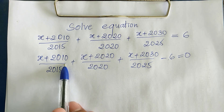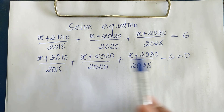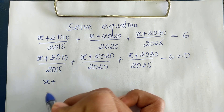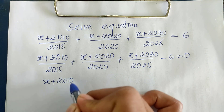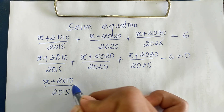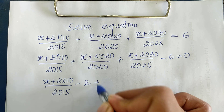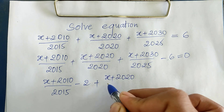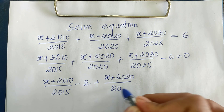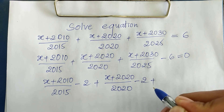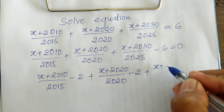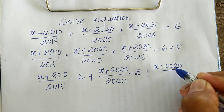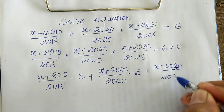And now this minus 6 — I write it as minus 2, minus 2, and minus 2. So minus 2, minus 2, minus 2 gives us minus 6. So we get (h + 2016 + 10) divided by (2016 + 15) minus 2, plus (h + 2016 + 20) divided by (2016 + 20) minus 2, plus (h + 2016 + 25) divided by (2016 + 25) minus 2, equal to 0.